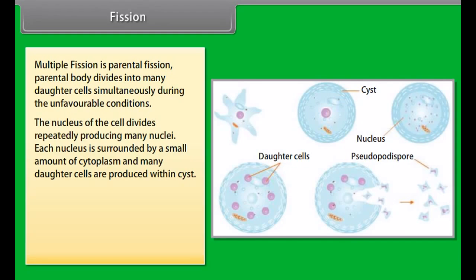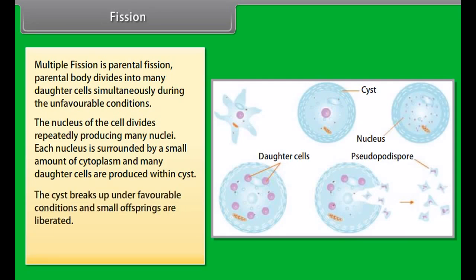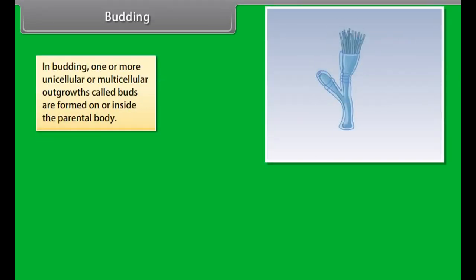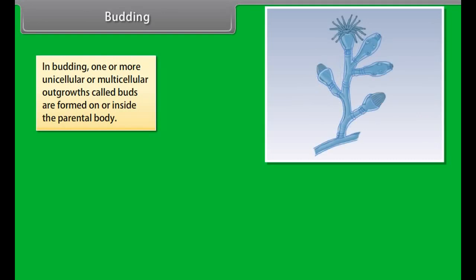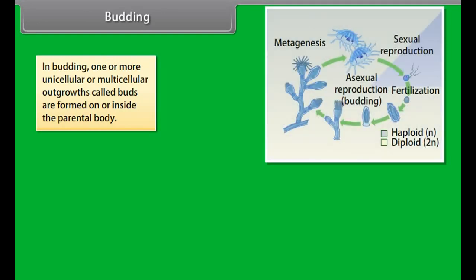Multiple fission is when the parental body divides into many daughter cells simultaneously during unfavorable conditions. The nucleus of the cell divides repeatedly, producing many nuclei. Each nucleus is surrounded by a small amount of cytoplasm and many daughter cells are produced within a cyst. The cyst breaks up under favorable conditions and small offspring are liberated. An example of multiple fission is the malaria parasite Plasmodium.